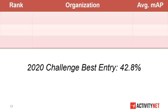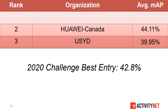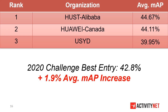If you participated in our last year's workshop, our first prize was awarded to a team from Huazhong University of Science and Technology who achieved a score of 42.8% average MAP. The third team this year is from the University of Sydney who achieved 39.95% average MAP. The second team is from Huawei Canada who achieved 44.11% average MAP — already higher than last year's winners. The first winner is from Huazhong University of Science and Technology and Alibaba who achieved 44.67%, overperforming the second team by 0.5%. Congratulations to all the teams.